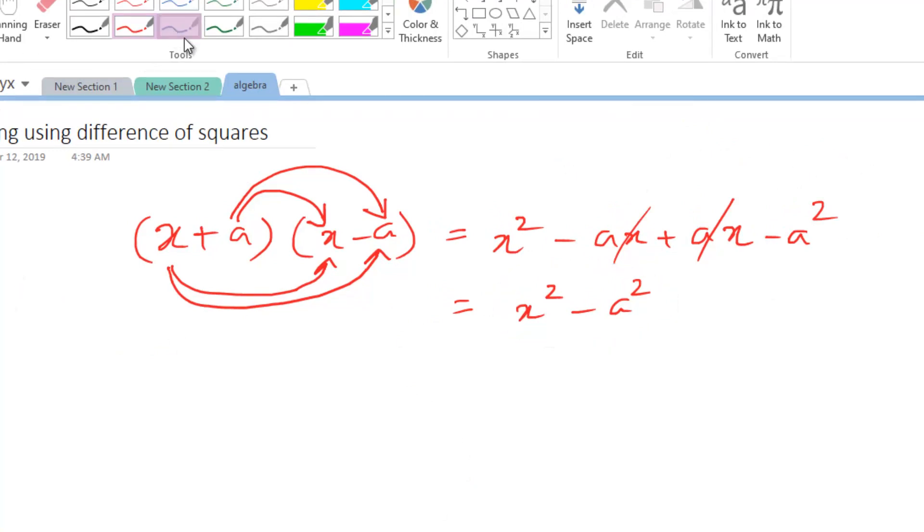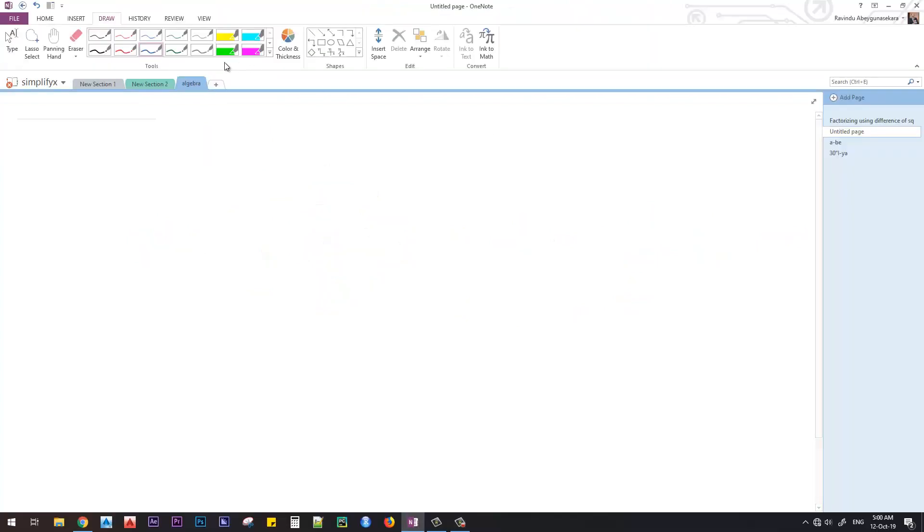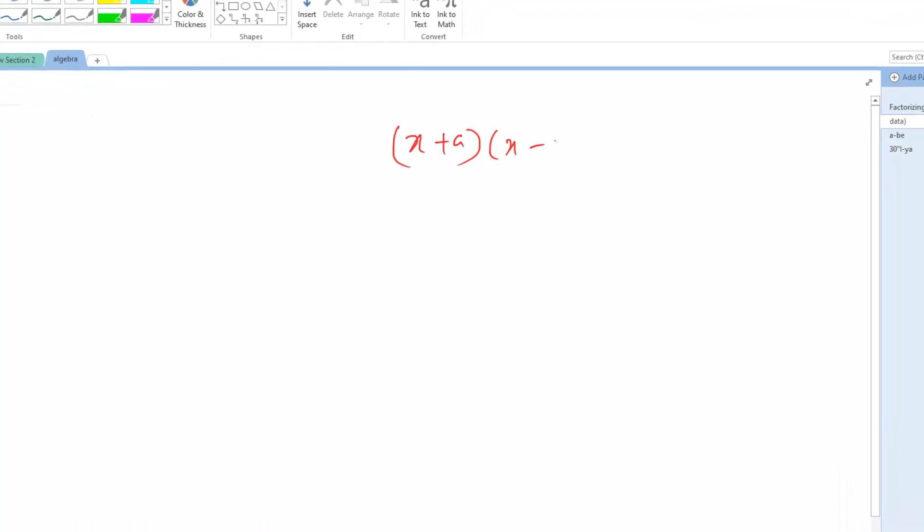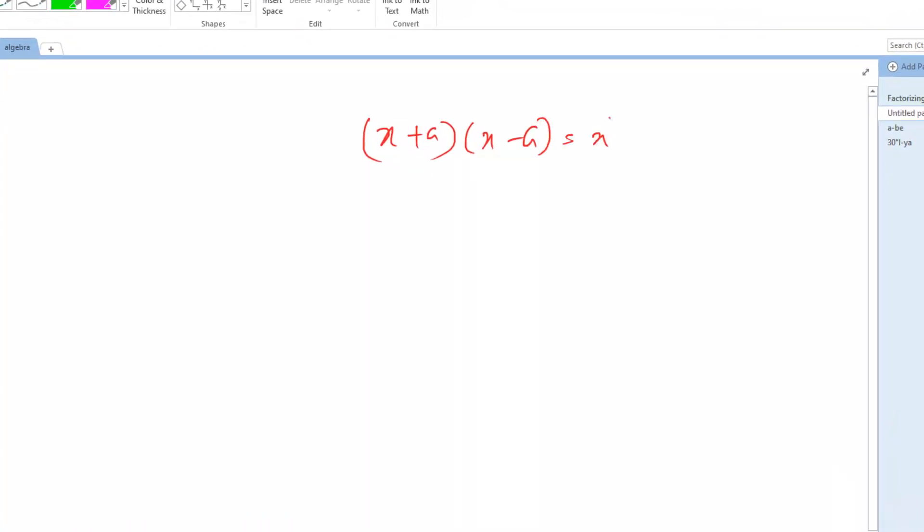So let's jump into a problem. We have our theory here: (X + A)(X - A) equals X squared minus A squared. In other words, X squared minus A squared can be written as (X + A) multiplied by (X - A).